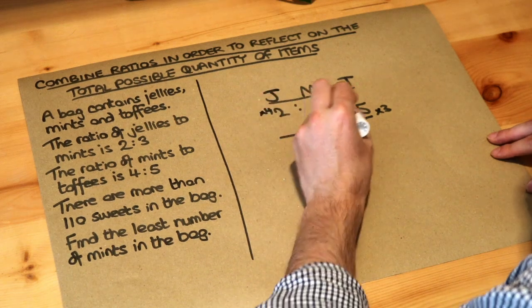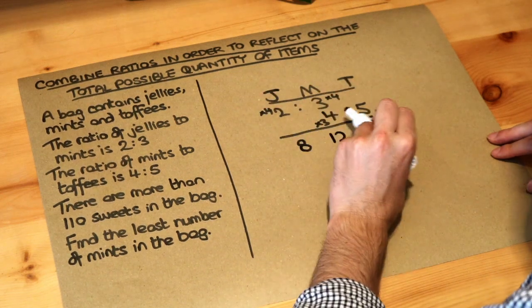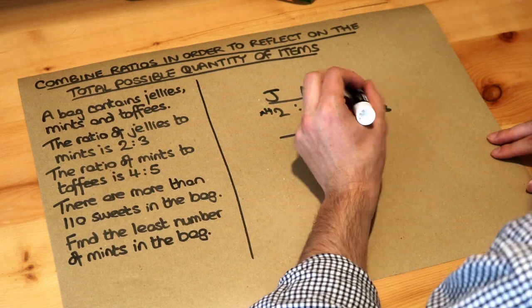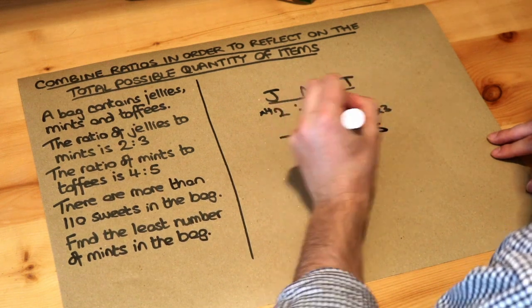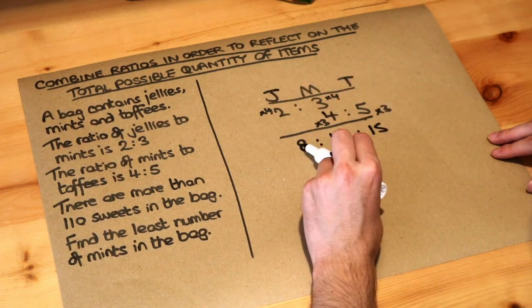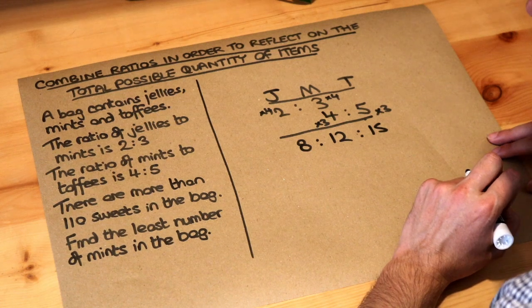2 times 4 is 8. 3 times 4 is 12. 4 times 3 is still 12 so that's consistent. 5 times 3 is 15. So that is our combined ratio jellies to mints to toffees. It's 8 to 12 to 15 and we can't simplify that any further.